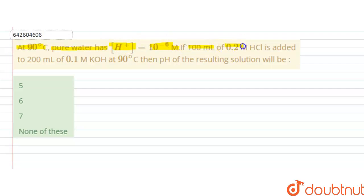If 100 ml of 0.2 molar HCl is added to 200 ml of 0.1 molar KOH at 90 degrees Celsius, then pH of the resulting solution will be.